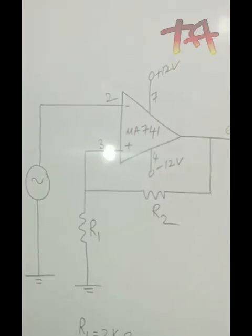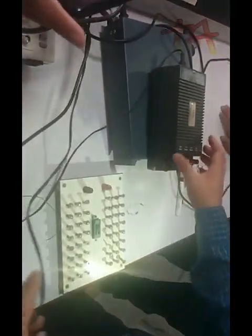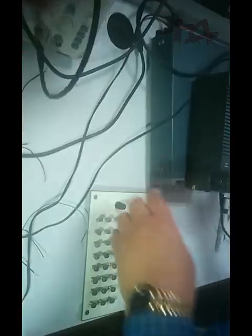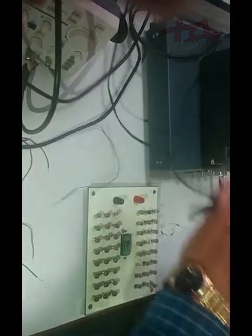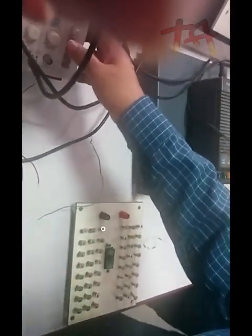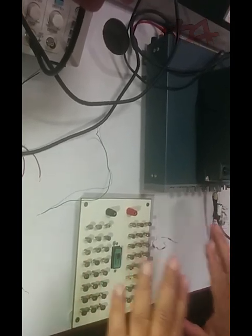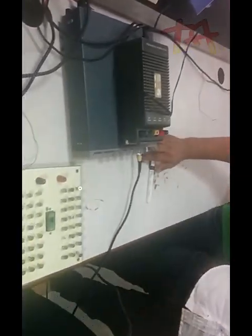Pins 1 and 5 are not connected. Next, let us look at the required equipment. We need a regulated power supply providing +12V and -12V, a function generator for the sinusoidal input signal, and an oscilloscope using both channels. I have already shown how to adjust the oscilloscope and the function generator.